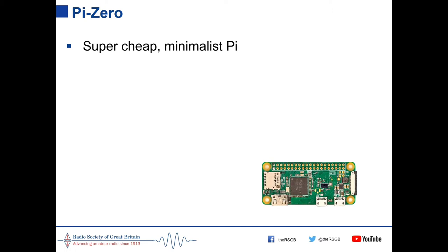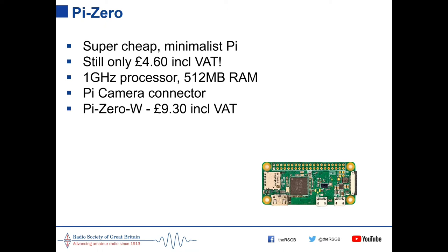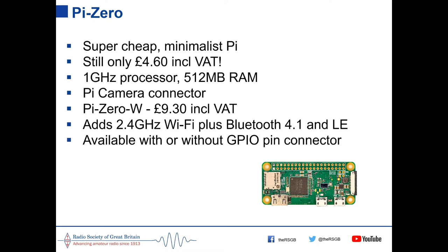The Pi Zero is a super cheap minimalist Pi using a single-core processor at just £4.60 including VAT. It runs Linux with a full desktop, though it may be sluggish. It has a 1 GHz processor, 512 MB RAM, and a Pi camera connector. The Zero W version adds 2.4 GHz Wi-Fi and Bluetooth, featuring a novel triangle slot antenna at the bottom of the board. GPIO pins can be pre-soldered or left bare.